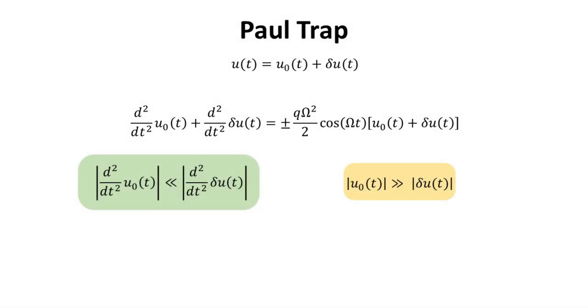As illustrated previously, the Mathieu equation solutions can be approximated as follows. The acceleration of the slow motion is negligible with respect to the acceleration of the micro-motion. Likewise, the amplitude of the micro-motion is negligible with respect to the amplitude of the slow motion. With these considerations, we find the following differential relation between the micro-motion delta U, and the slow-motion U0.